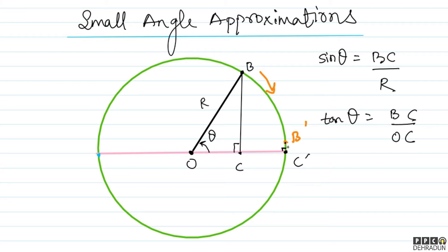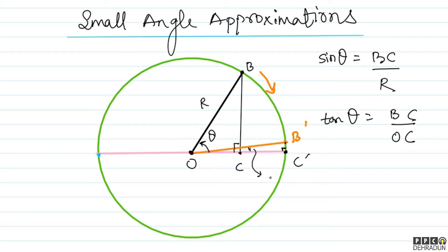This approximately looks like this — if I connect O to B' and join C', the straight line and the arc look like the same thing. Now when I have a new angle theta', and theta' is very small — tan theta' equals perpendicular upon base, which means B'C' upon OC'. And sin theta' is perpendicular B'C' upon hypotenuse OB'.